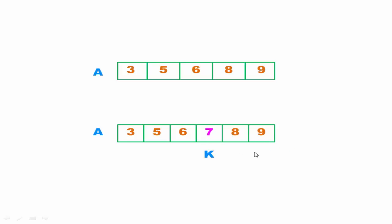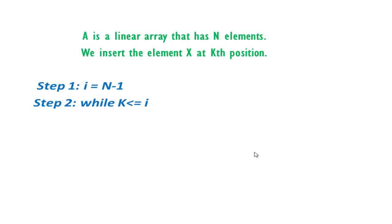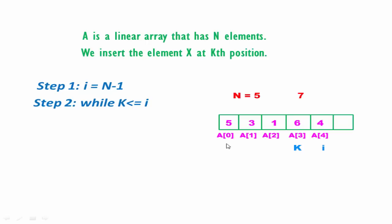Next we see the algorithm. Suppose A is a linear array that has n elements, and we insert the element X at the kth position. The first thing we need to do is set a counter i to the upper bound. Since we consider the first element is at the 0th position.